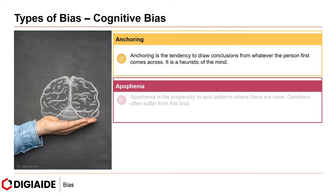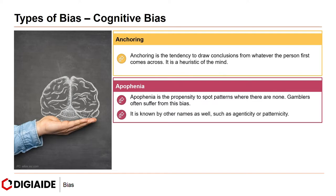Next, apophenia. Apophenia is the propensity to spot patterns when there are none. Gamblers often suffer from this bias. It is known by other names as well, such as agenticity or patternicity.